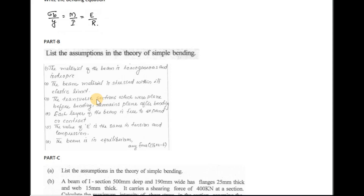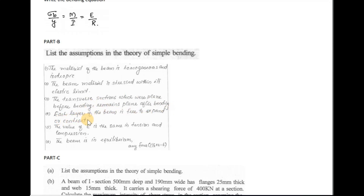Next question: state the assumptions in the theory of simple bending. The assumptions are: the material of the beam is homogeneous and isotropic; the beam material is stressed within the elastic limit; transverse sections which are plane before bending remain plane after bending; each layer of the beam is free to expand or contract; the value of the modulus of elasticity is the same for both tension and compression; and the beam is in equilibrium.